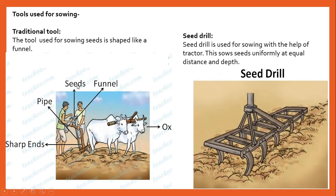The tools used for sowing: traditionally, a funnel-shaped tool is used. Seeds are filled into the funnel and pass through a pipe having a sharp end. This sharp end pierces the soil and places the seed inside.